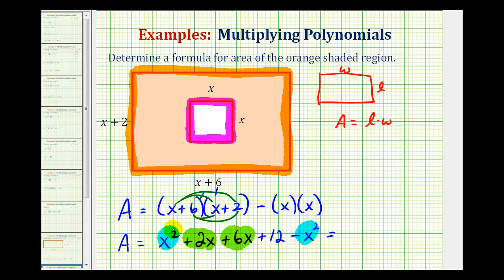For the x squared terms, notice how we have x squared minus x squared, well that would be zero. And then we have two x plus six x, that would be eight x, and then we still have the constant plus twelve.